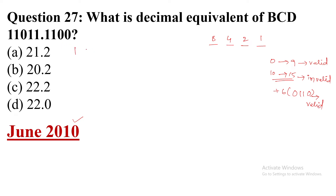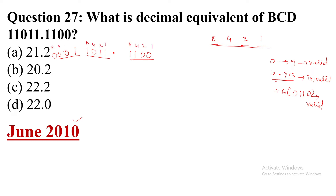Now take the BCD number 1101.1100. We split into 4-bit groups. Before the decimal point: 1101 and — since only one bit is left — we pad with three zeros to get 0001. Checking with weights 8, 4, 2, 1: 1101 gives 8+2+1=11, and the next group 0001 gives 8+4=12. Both are invalid.